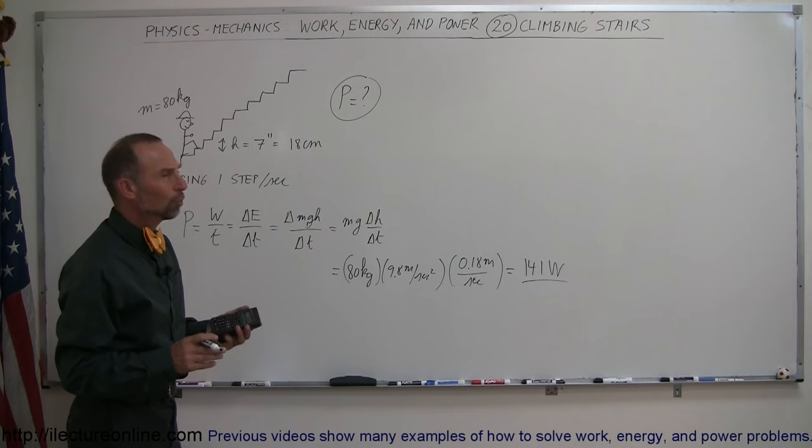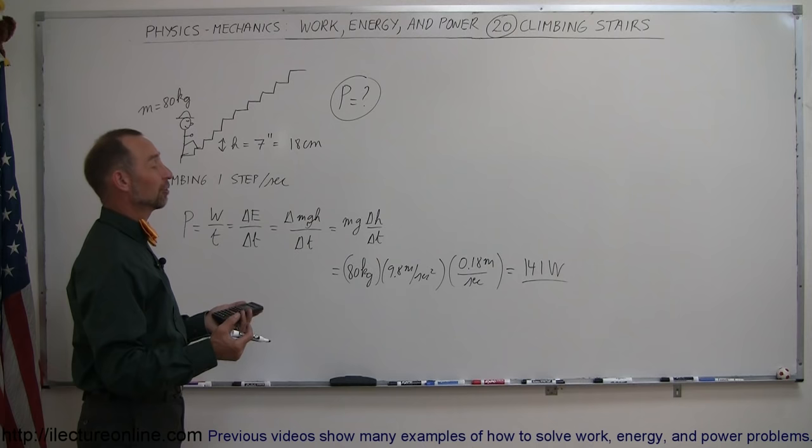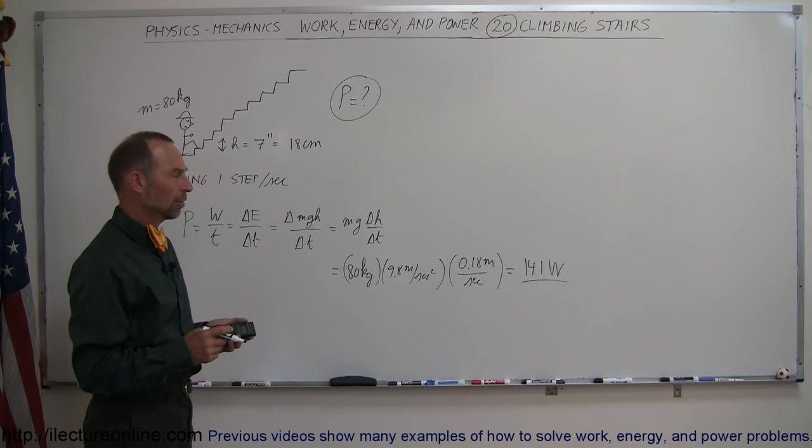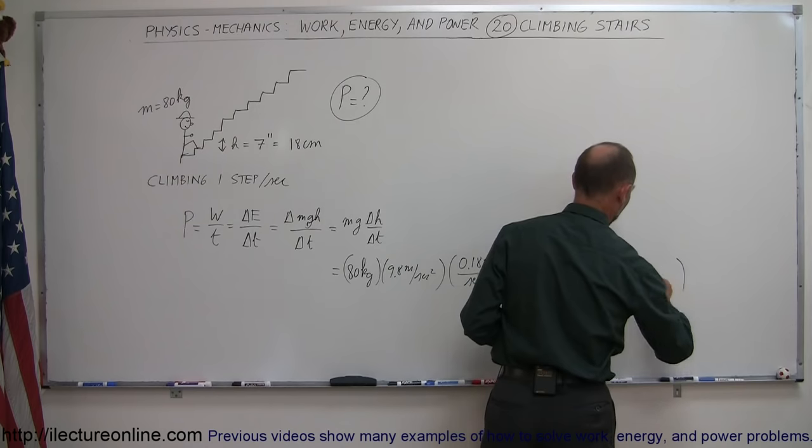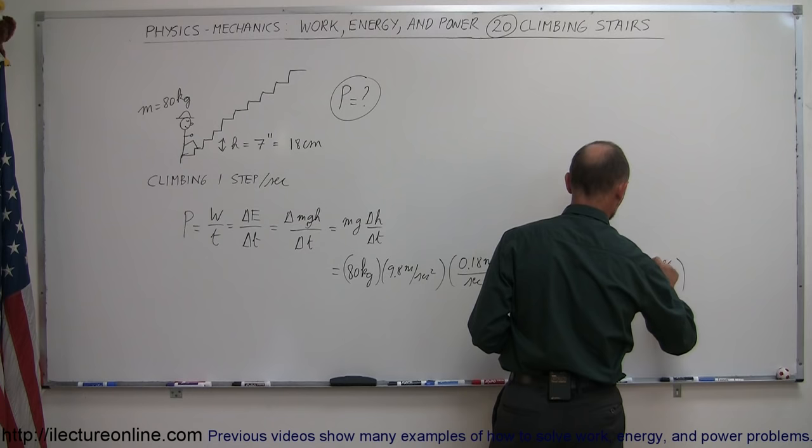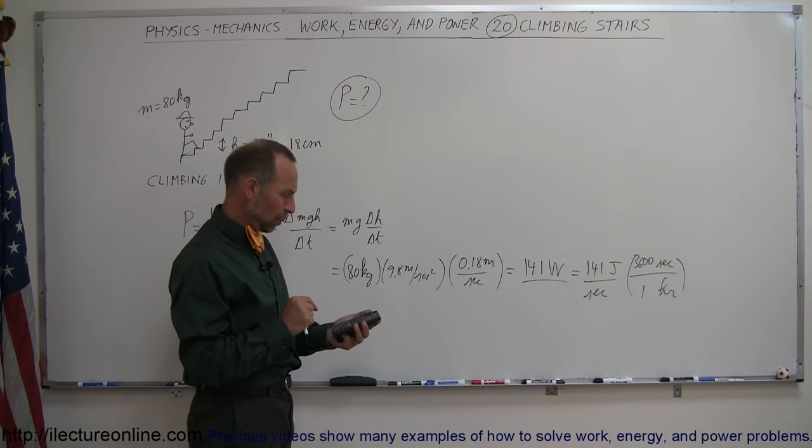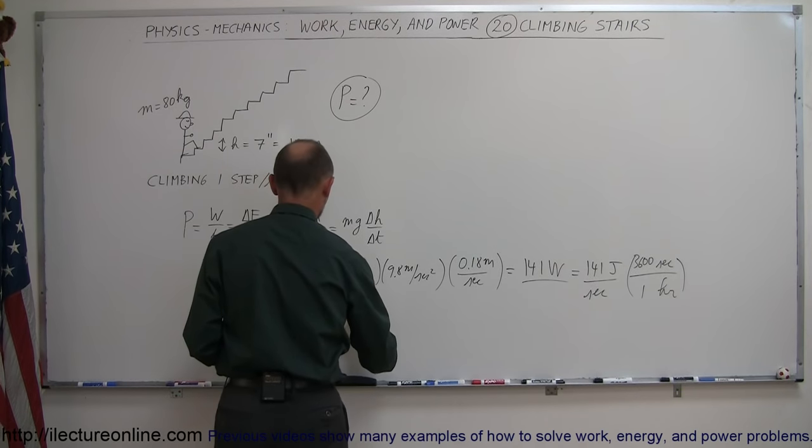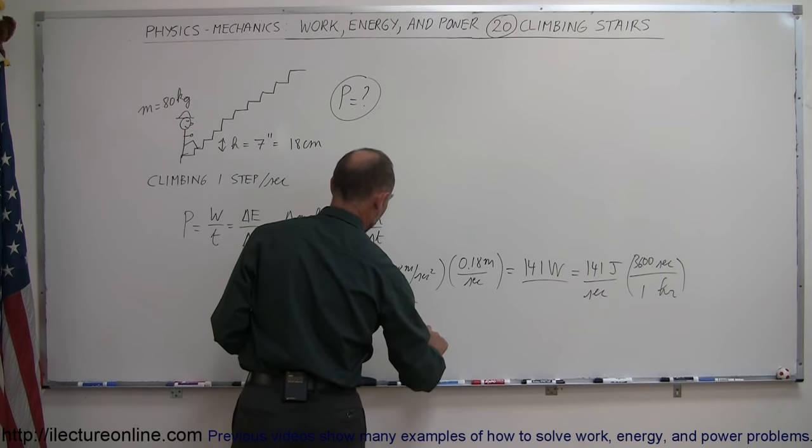That's 141 joules per second. That is how many joules per hour or how many food calories per hour? How many calories are you burning by doing this? So that's 141 joules per second, and if we convert that to hours, we need hours at the bottom and seconds at the top. That would be one hour or 3,600 seconds. If you multiply that times 3,600, we get 508,000 rounded off. This would be equal to 508,000 joules per hour.